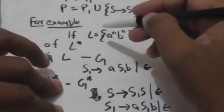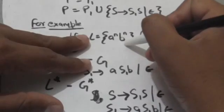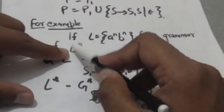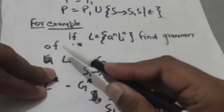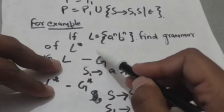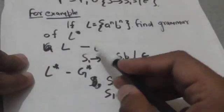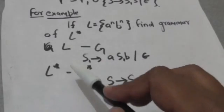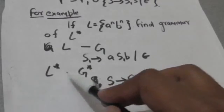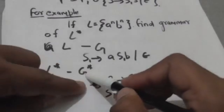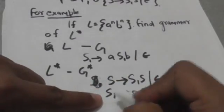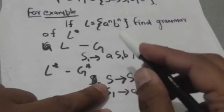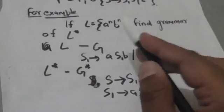This will be more clear with an example. Suppose L1 is a context-free language containing strings of the form a^n b^n. The grammar G of L1 contains productions: S1 derives A S1 B, and S1 derives empty string. S1 is the start symbol of G. Now suppose the grammar of L1 star is G*. Then G* contains all productions of grammar G, and also: S derives S1 S, S derives empty string, where S is the start symbol of G*.